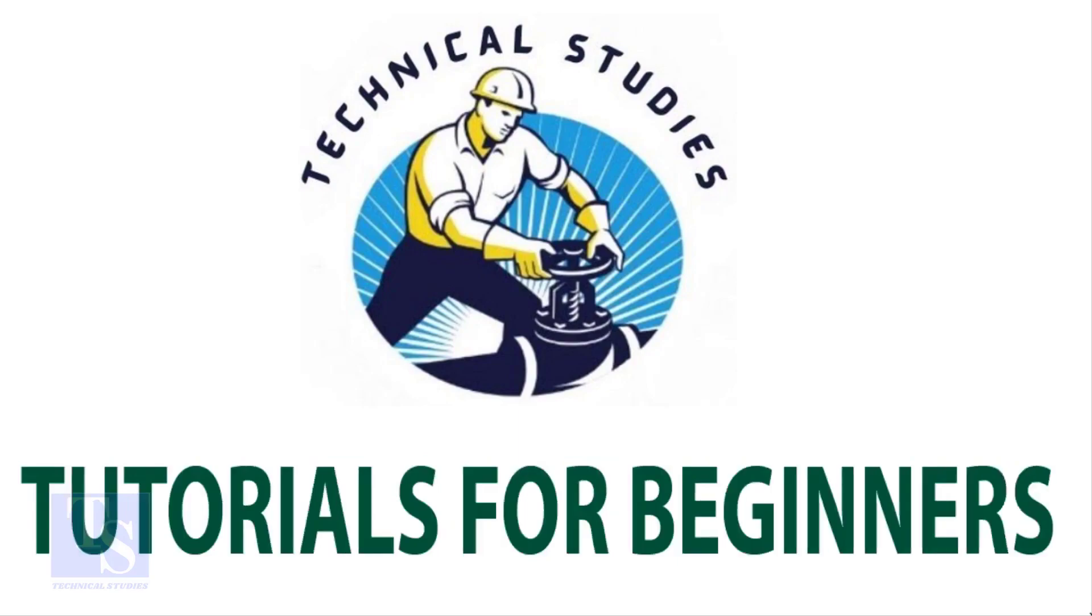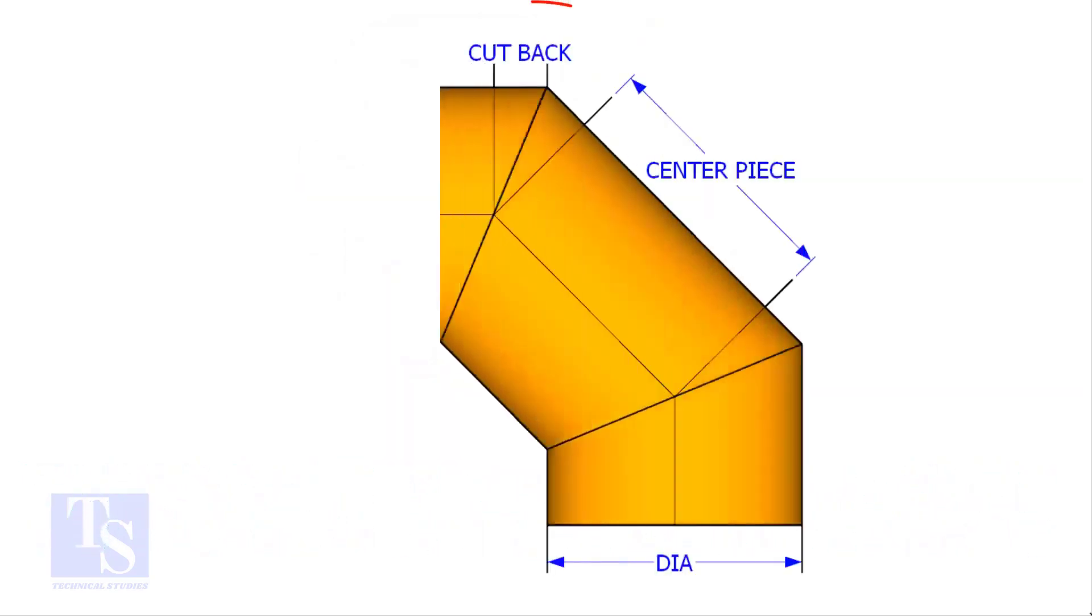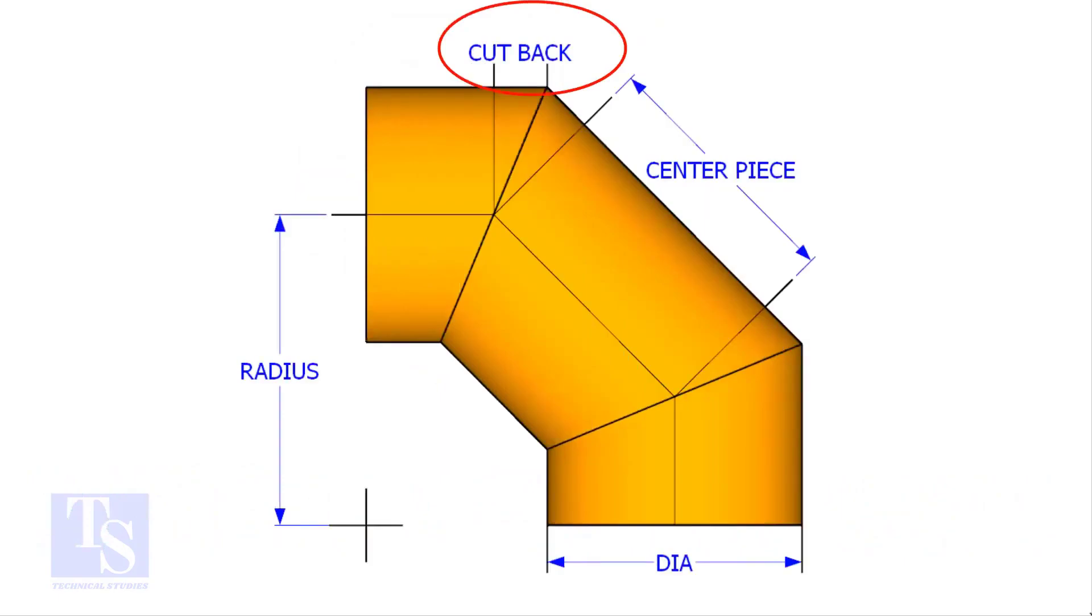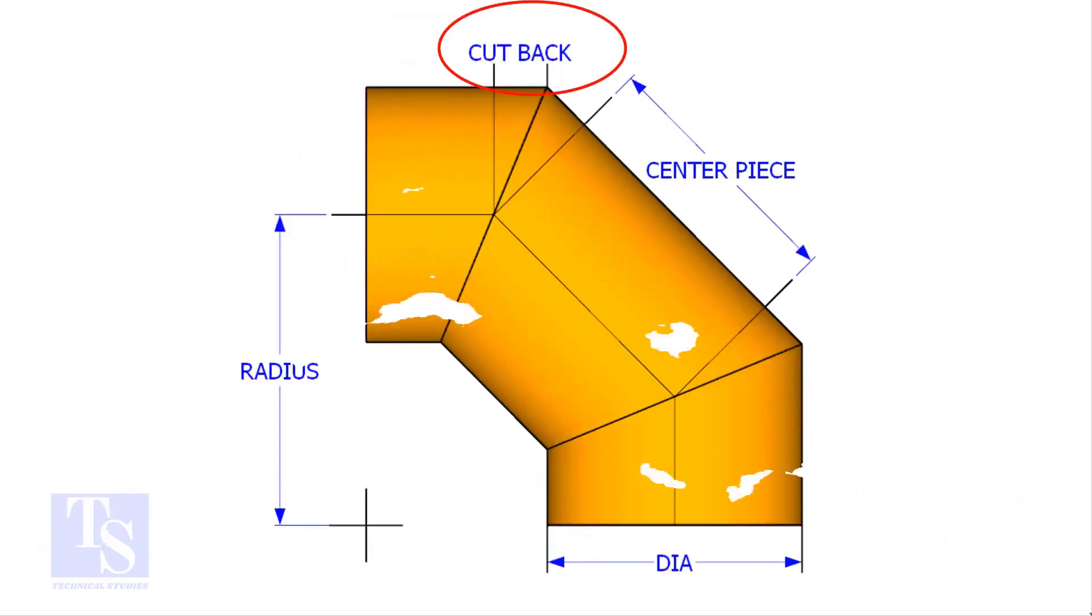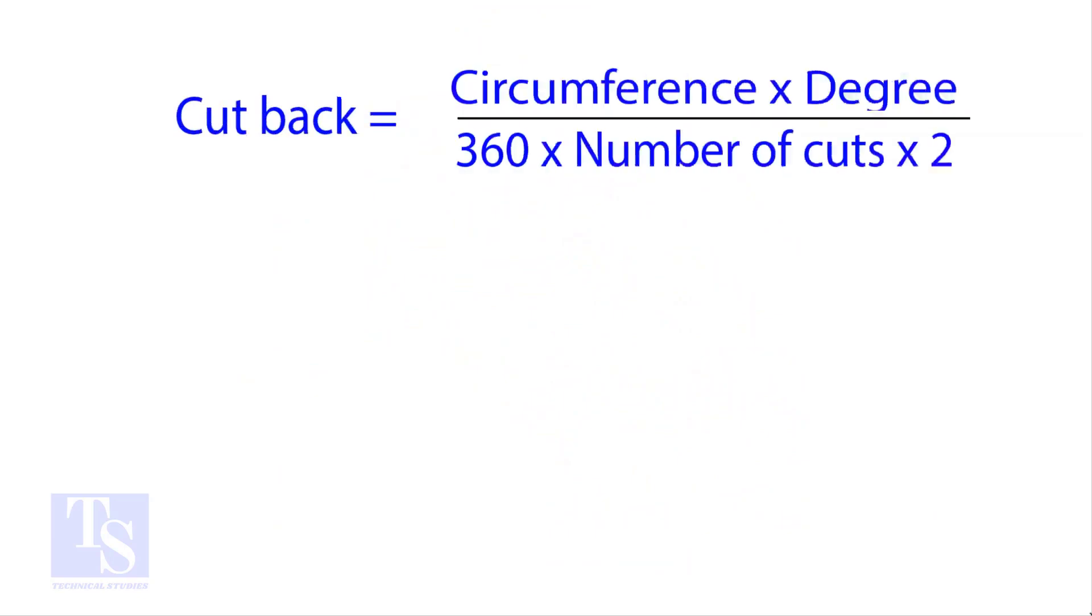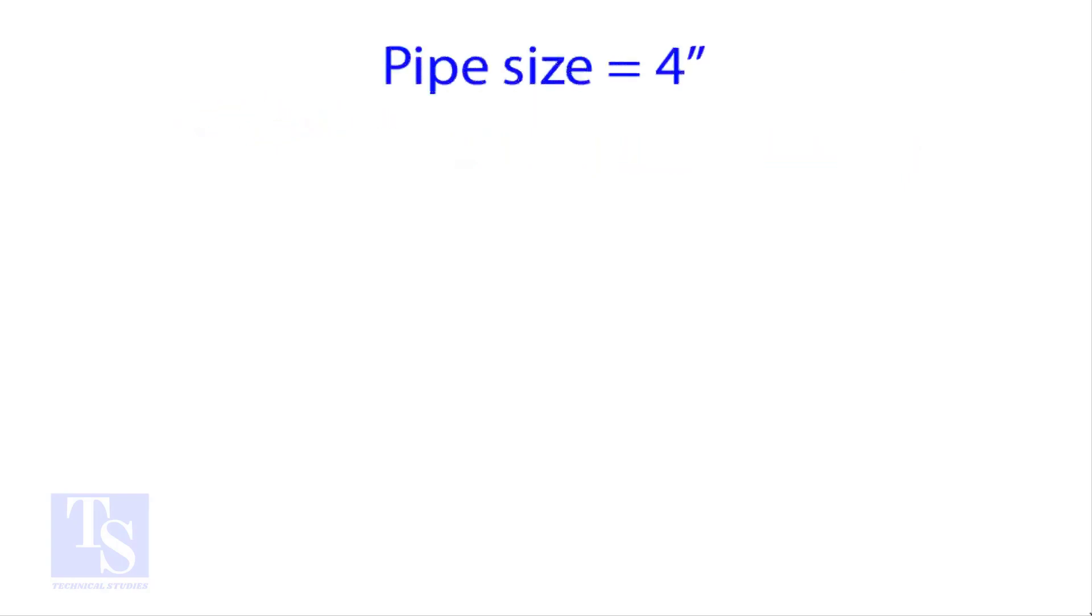This formula will work with up to nine cuts. The standard method to calculate the cutback is circumference into the wanted degree, divided by 360 into number of cuts into two. Let us try an example.